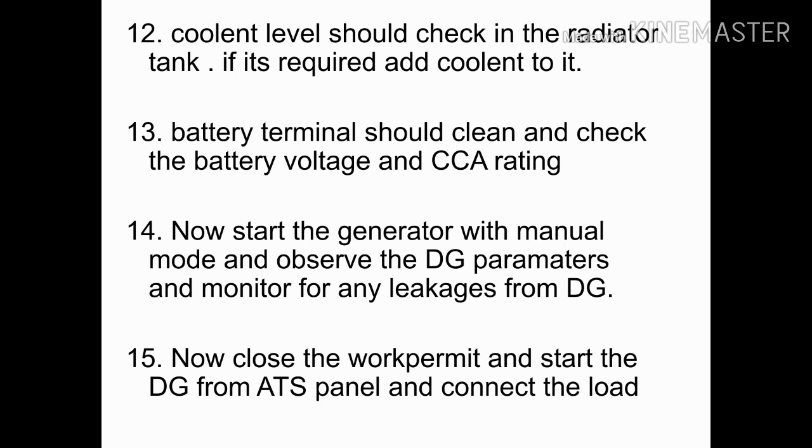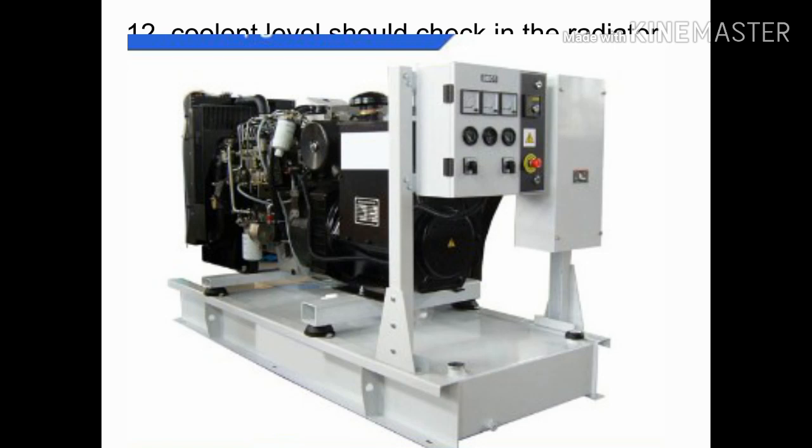These are the steps for normal periodic maintenance of the diesel generator. After completing them, start the generator in manual mode and run it for 15 minutes. Observe the DG parameter readings such as speed, pressure, and voltages. Check for any leakages from the oil tank, water separator, and coolant system. If everything is found normal, switch off the DG, close the work permit, then start the DG from the ATS panel in auto mode and reconnect the load to the supply.